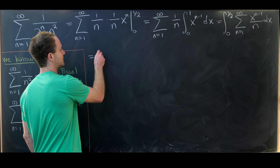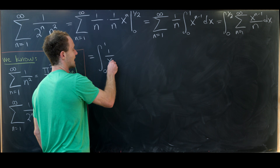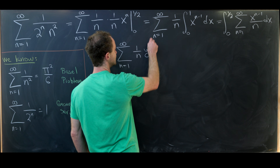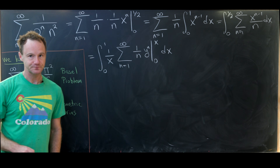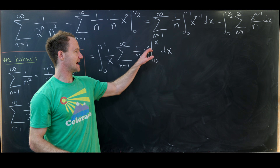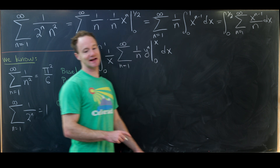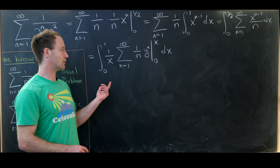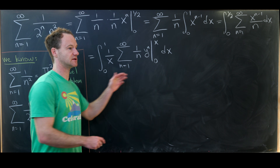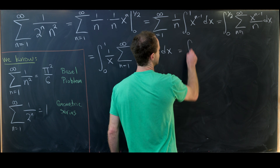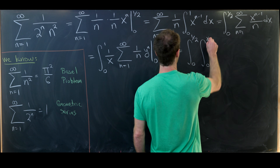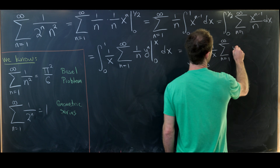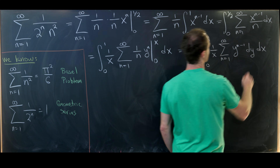We can do that, but we need a preparatory step. I'm going to write this as the integral from 0 to 1 of 1 over x times the sum as n goes from 1 to infinity of 1 over n times y to the n, evaluated from 0 to x, dx. When we evaluate at y equals x we get x to the n, but the 1 over x cancels it down to x to the n minus 1, which is exactly what we had. Now applying the fundamental theorem of calculus again changes the whole thing into a double integral: the integral from 0 to half, the integral from 0 to x, of 1 over x times the sum as n goes from 1 to infinity of y to the n minus 1, dy dx.